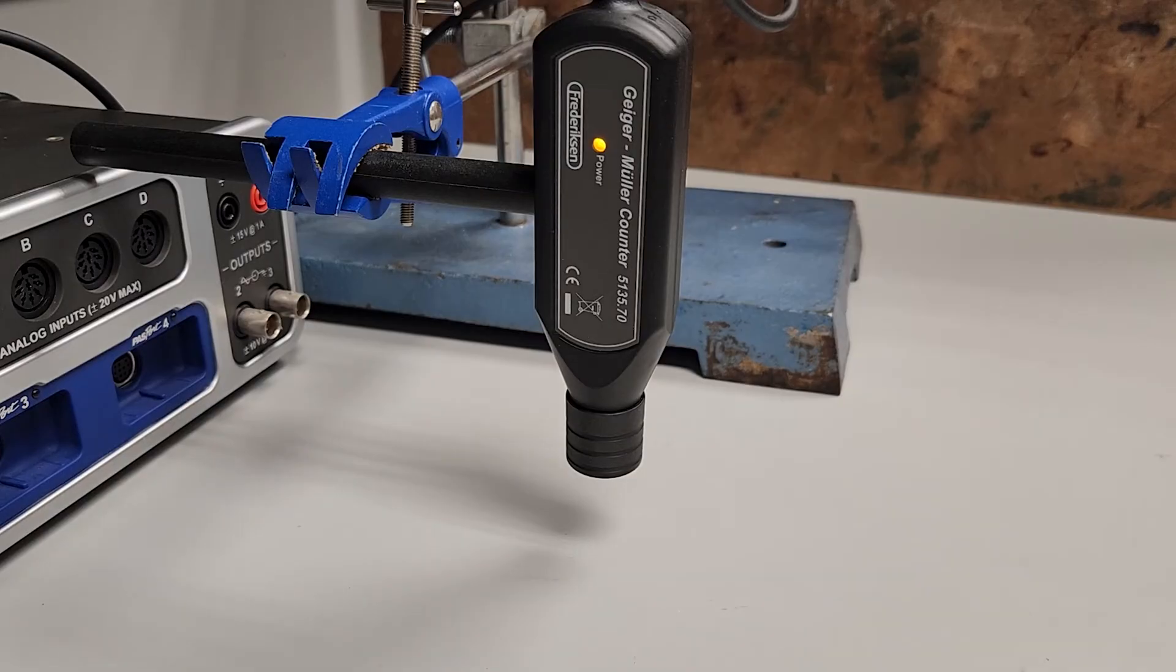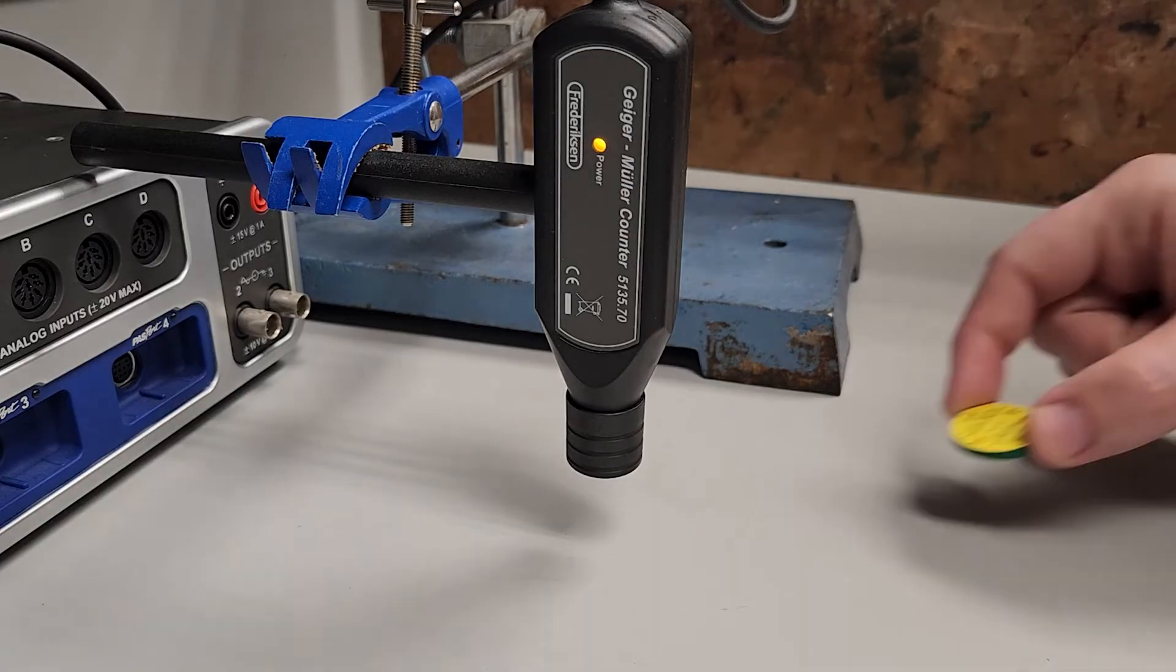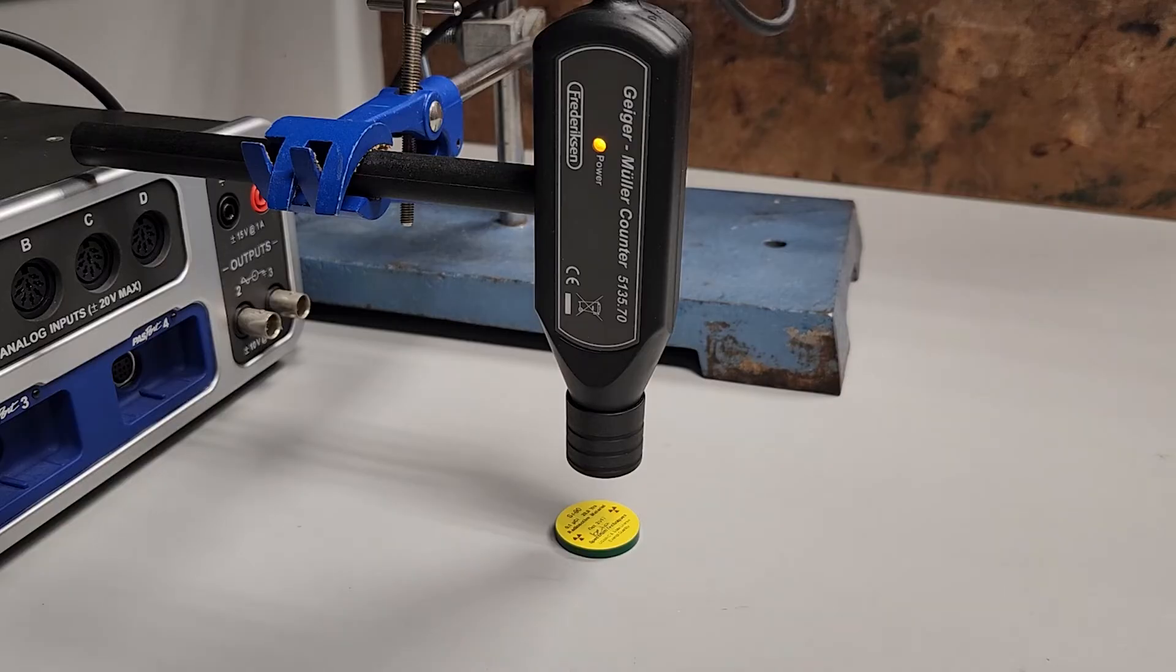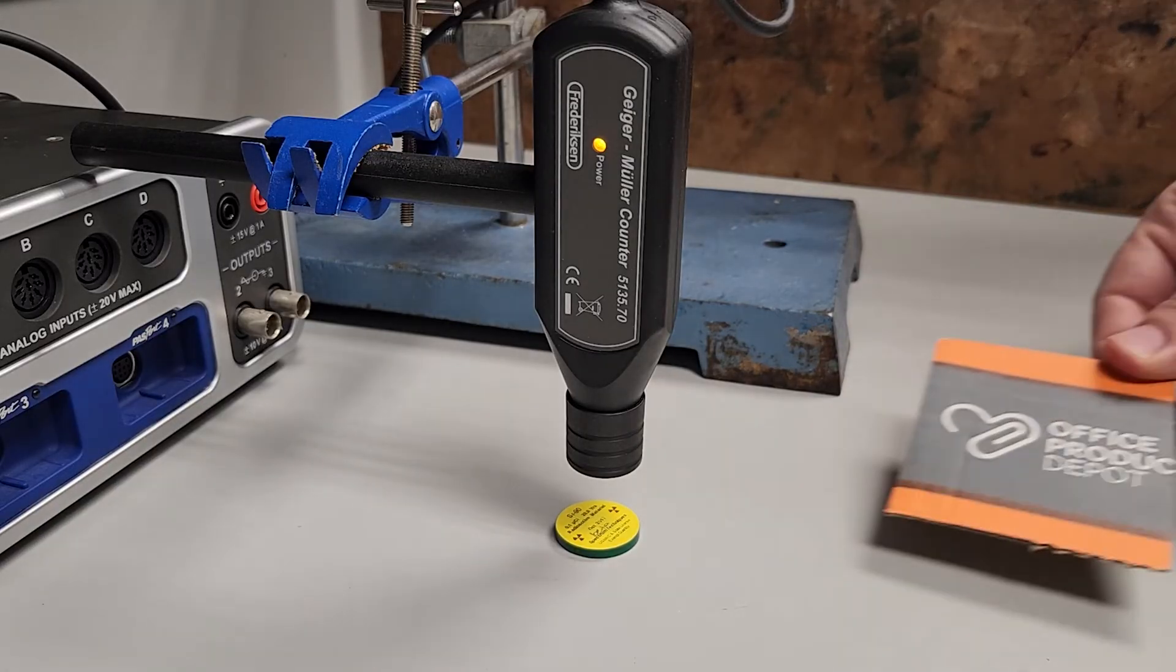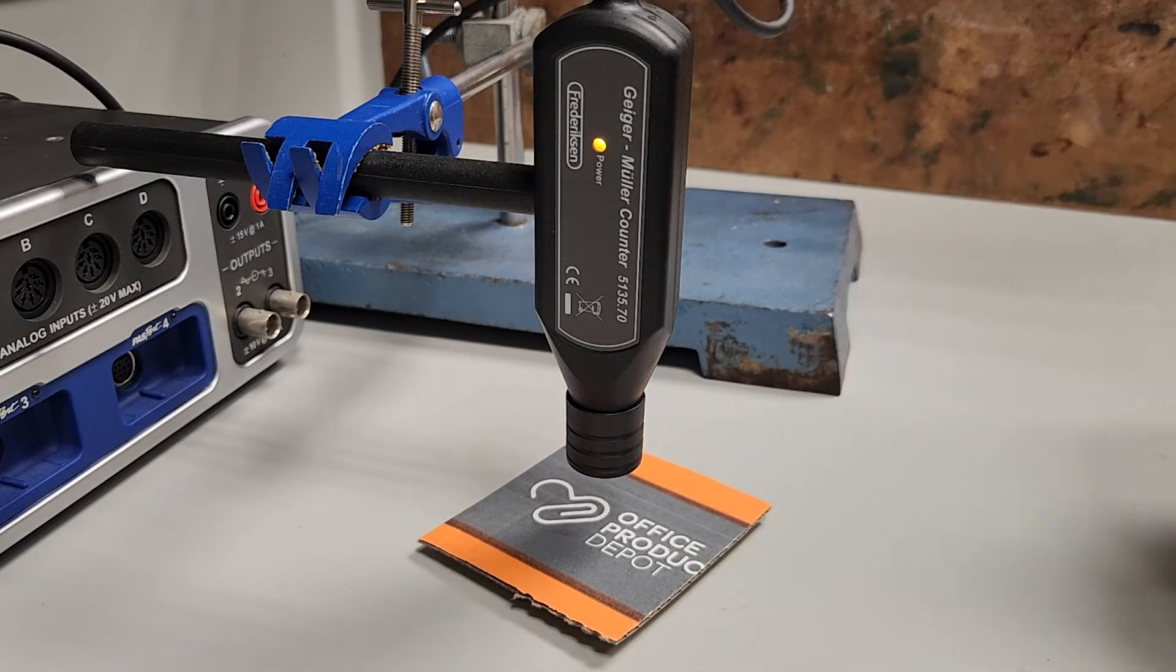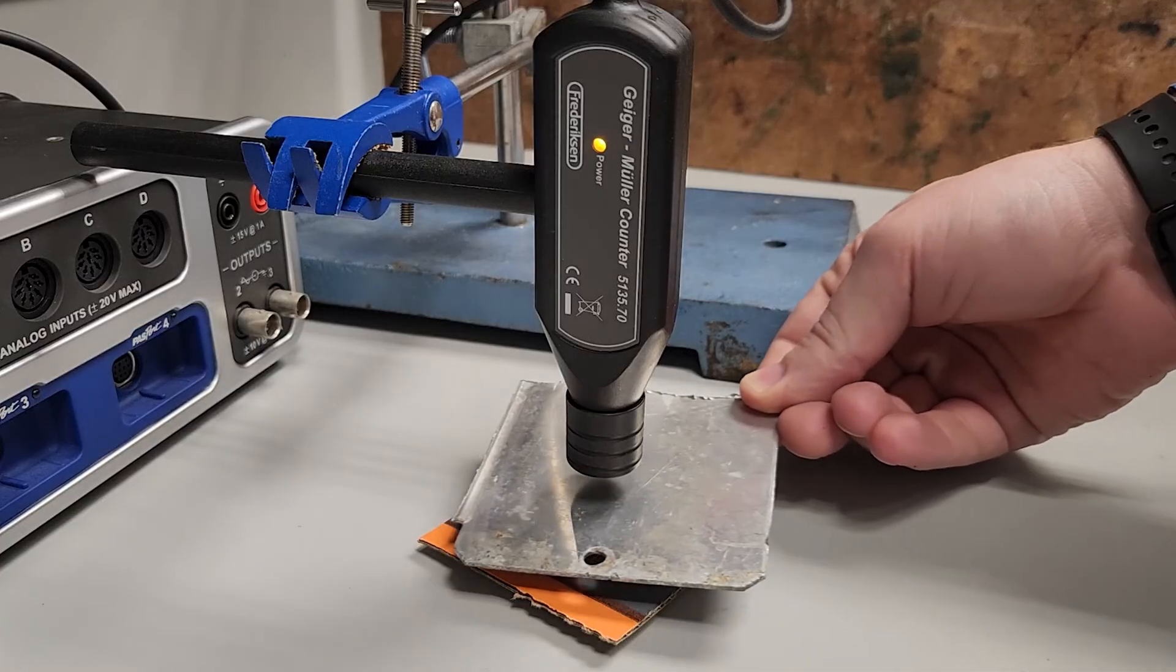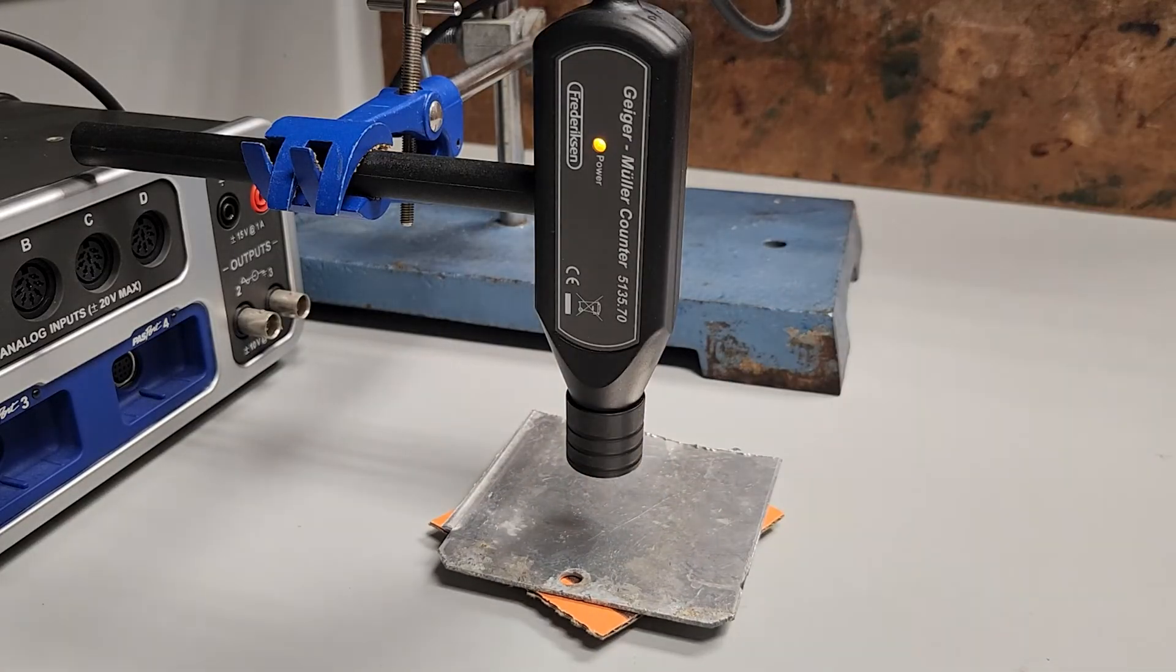I have here a Geiger counter, which measures radiation, as indicated by the beeps. By placing a source of beta radiation in front of the sensor, we hear the beeping increase. Adding a piece of cardboard has little to no effect, whereas this sheet of aluminum stops the beta radiation completely.